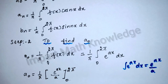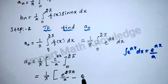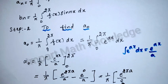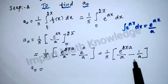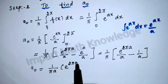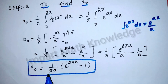Now apply the limits. The upper limit is 2π, giving e^(2πa)/a. The lower limit is 0, giving e^(0)/a = 1/a. So a0 = (1/π)[e^(2πa)/a − 1/a]. Taking a as common, a0 = (1/πa)(e^(2πa) − 1).